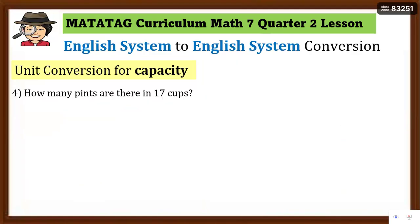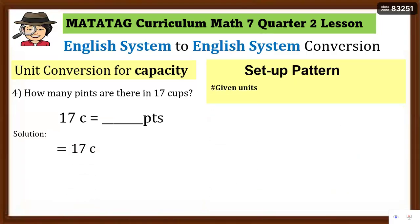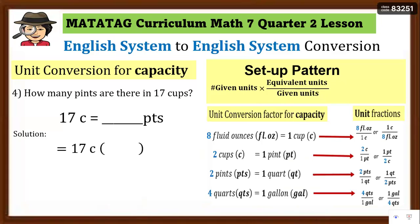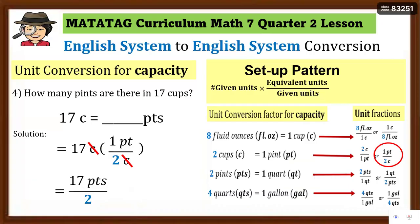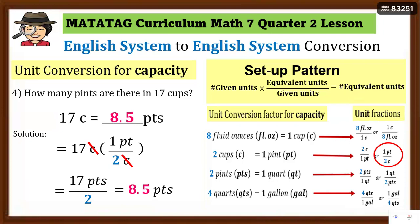Number 4: How many pints are there in 17 cups? Write the equation and set up the pattern. The given unit is cups going to pints, so cups must be in the denominator and pints in the numerator — that is 1 pint over 2 cups. Cancel the cups, then multiply: 1 pint times 17 equals 17 pints divided by 2, which equals 8.5 pints. So there are 8.5 pints in 17 cups.